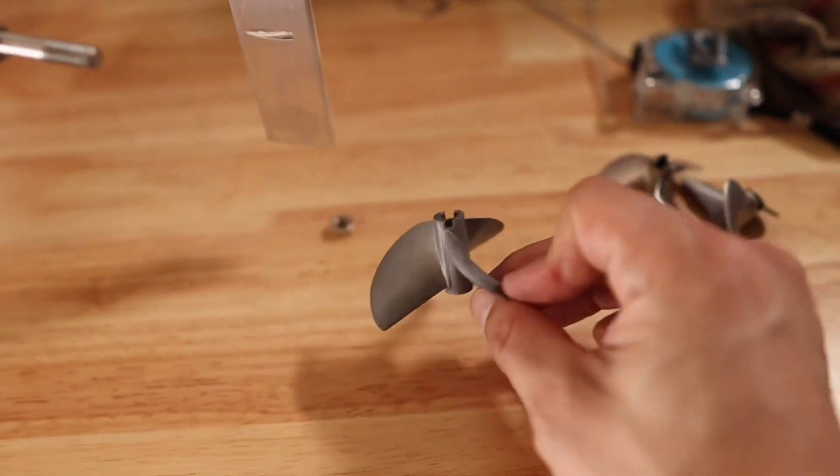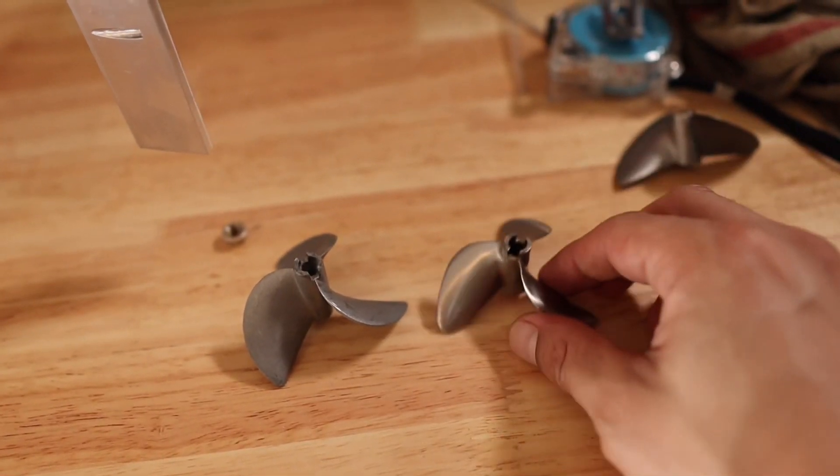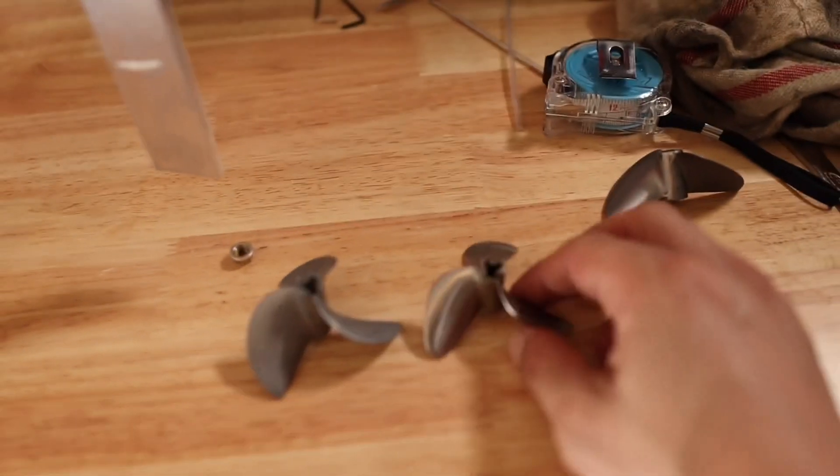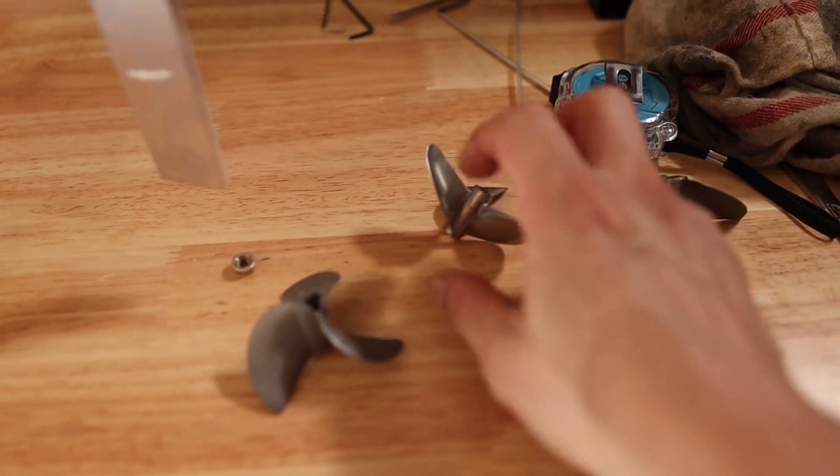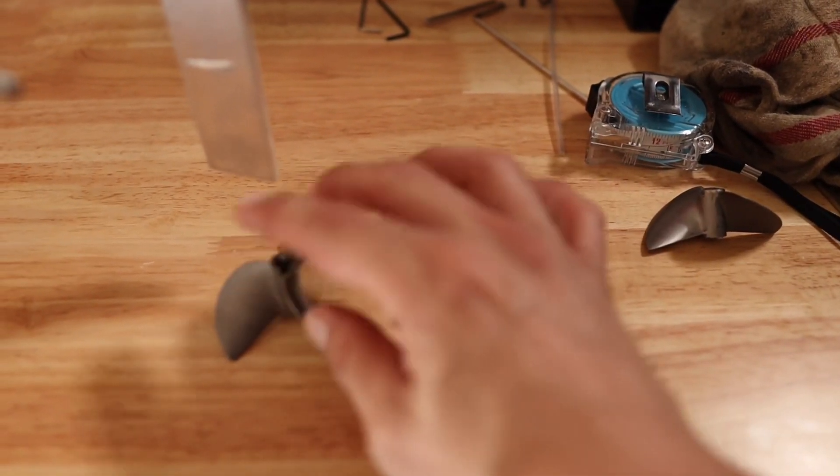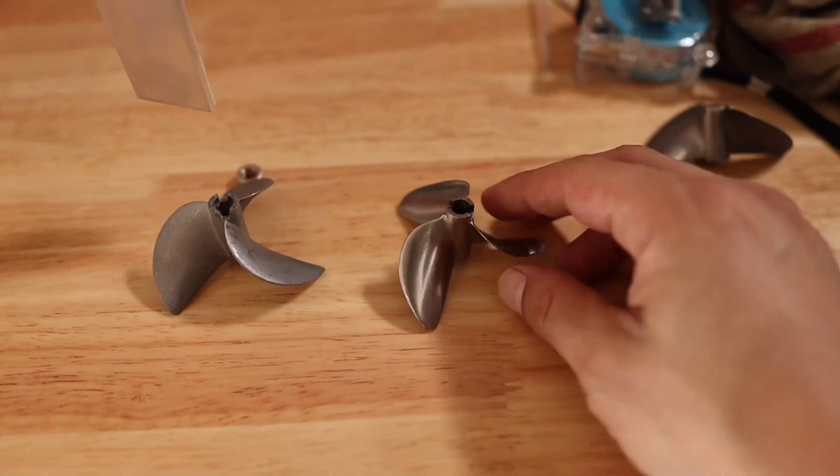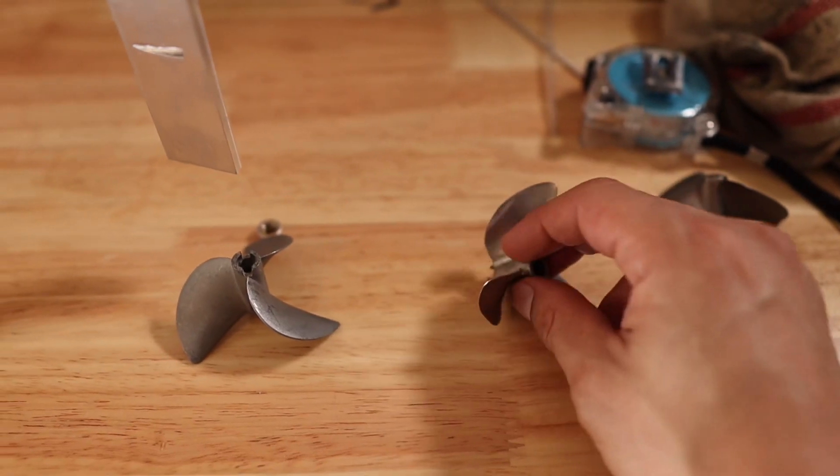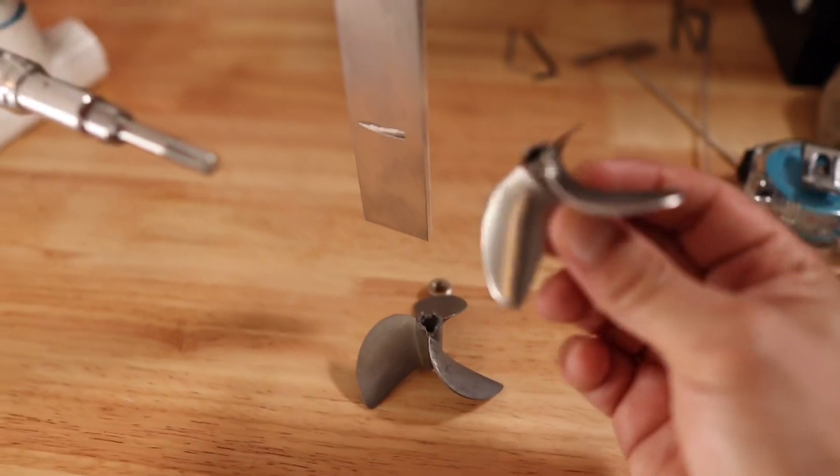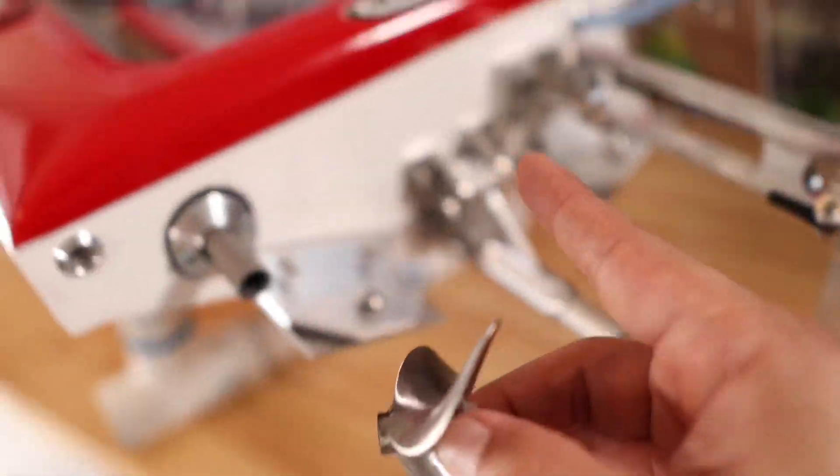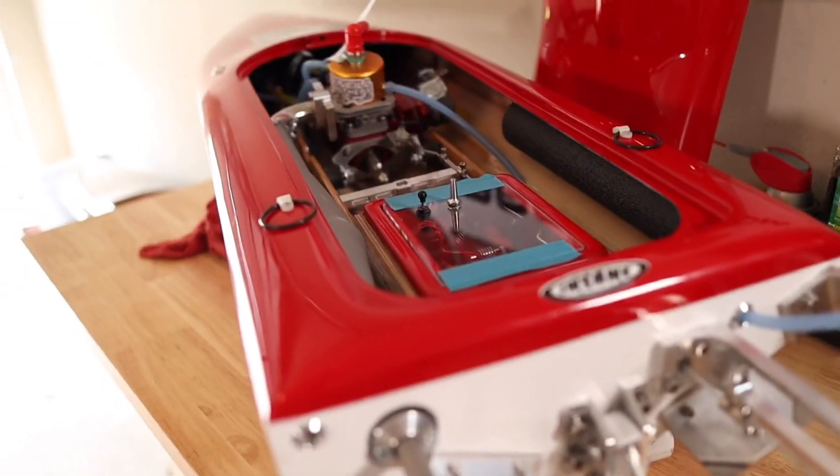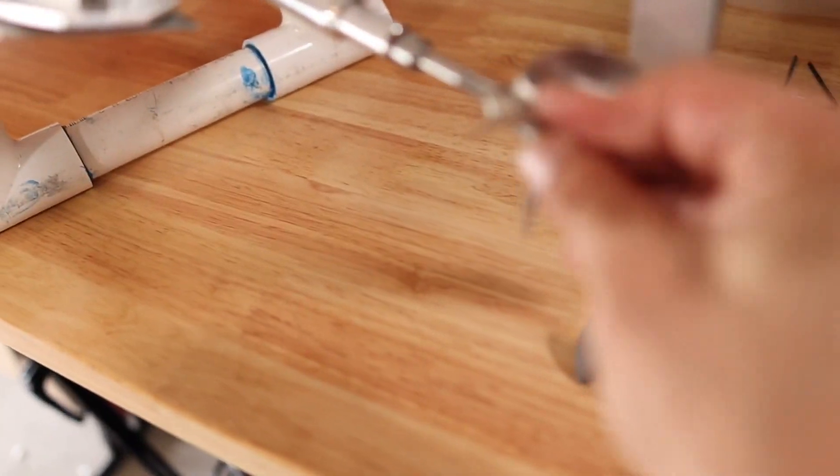And then here I have another propeller. This is a modified, I'm sorry, not modified. This is a, I think it's the same pitch as this one here. I don't know, but this one's balanced and this one is sharpened. Okay, so this one I use on a mono, so this one may be the one that I'm going to end up using on this Synergy Insane Boats.